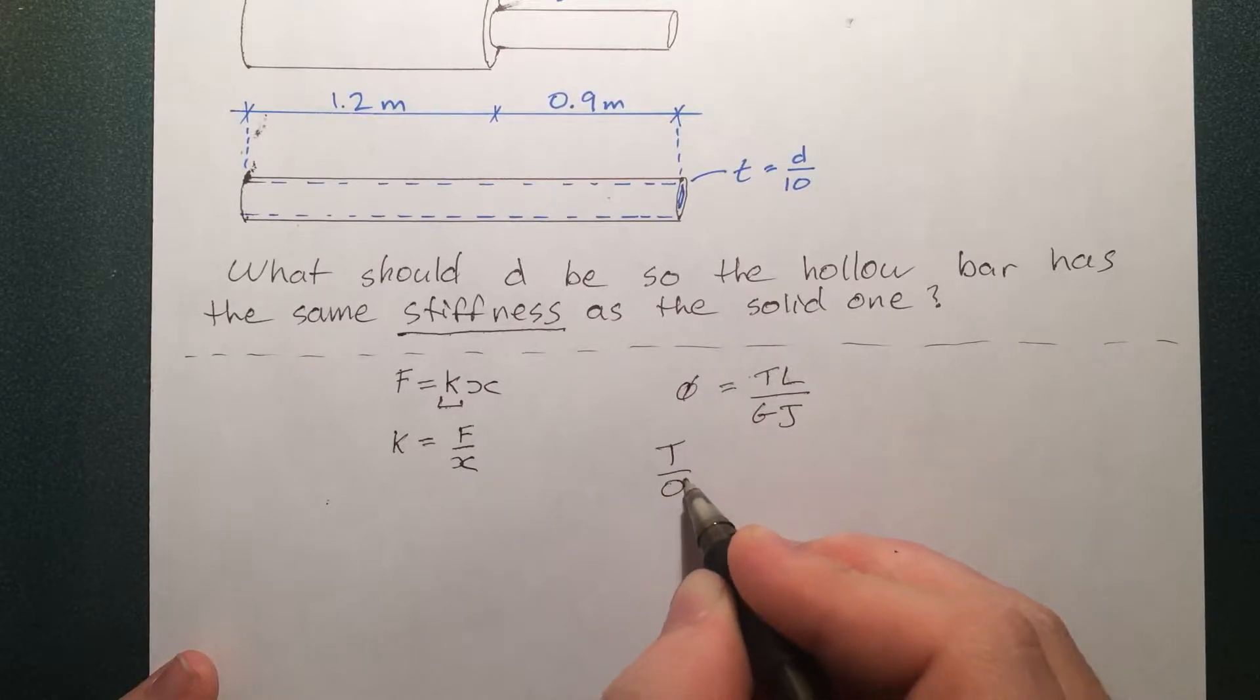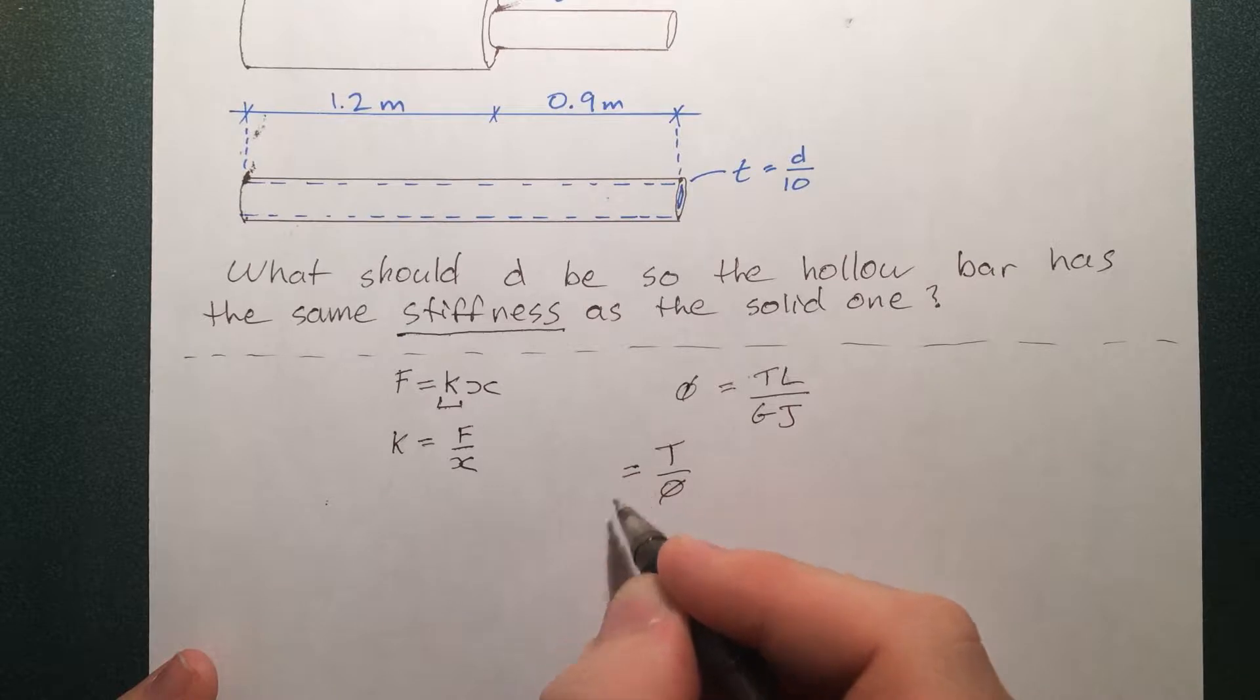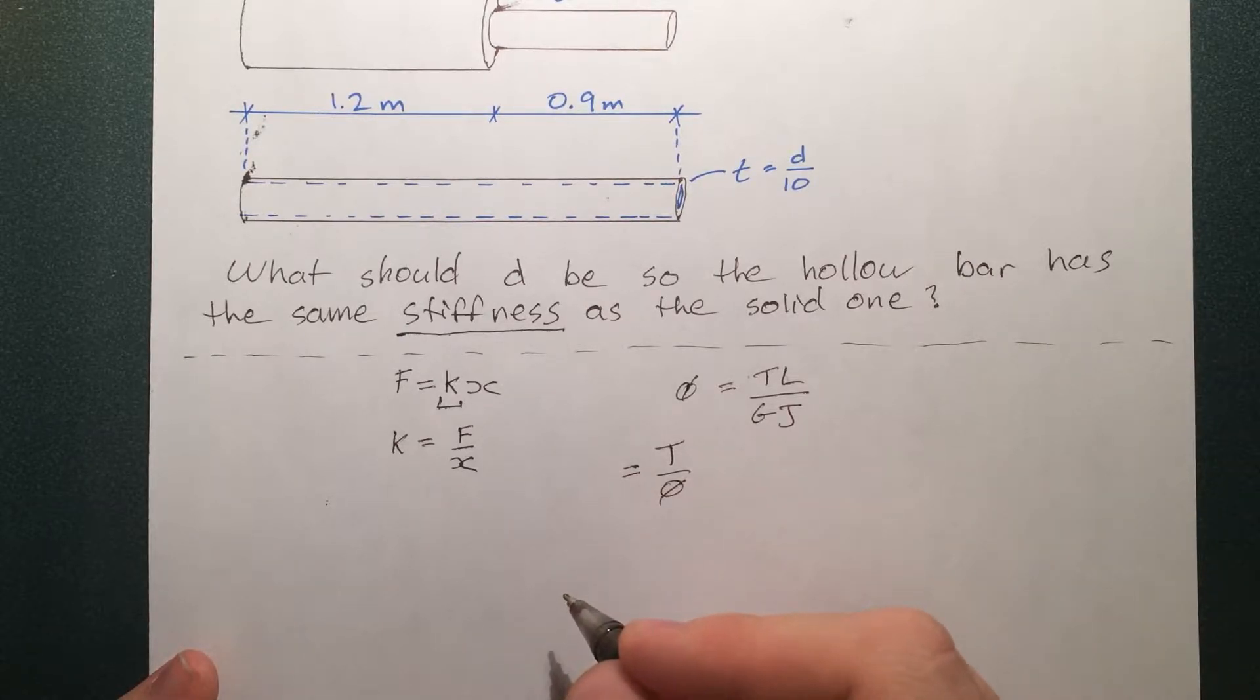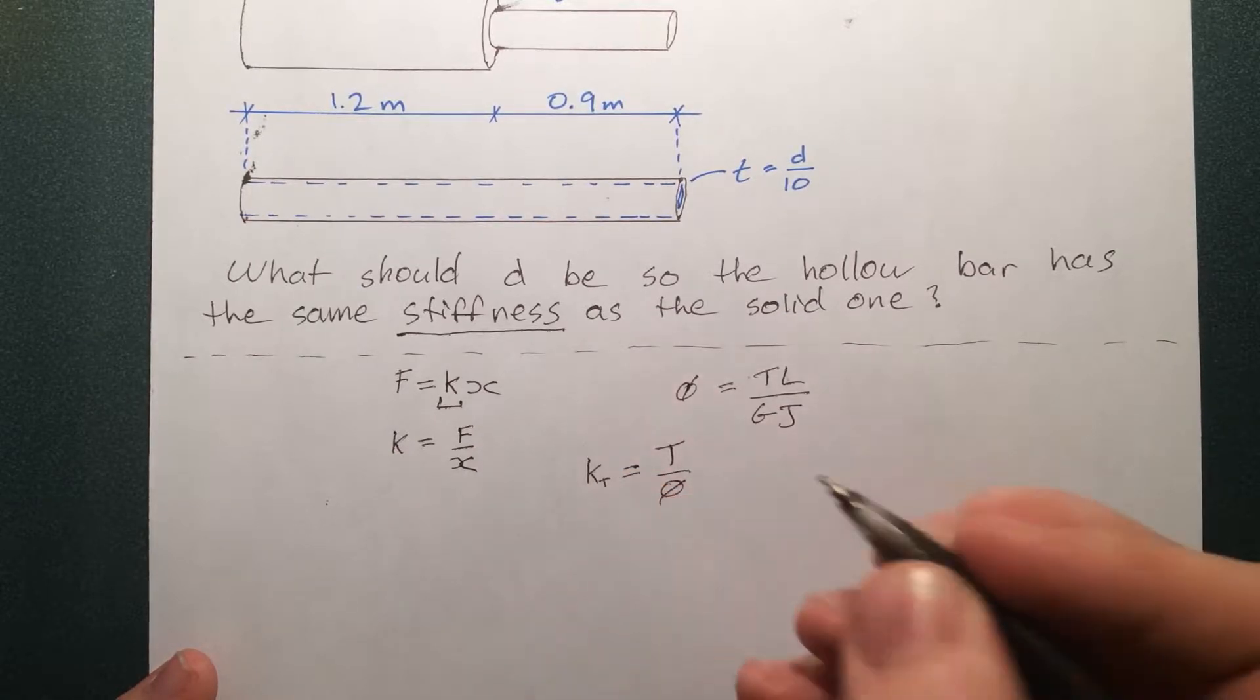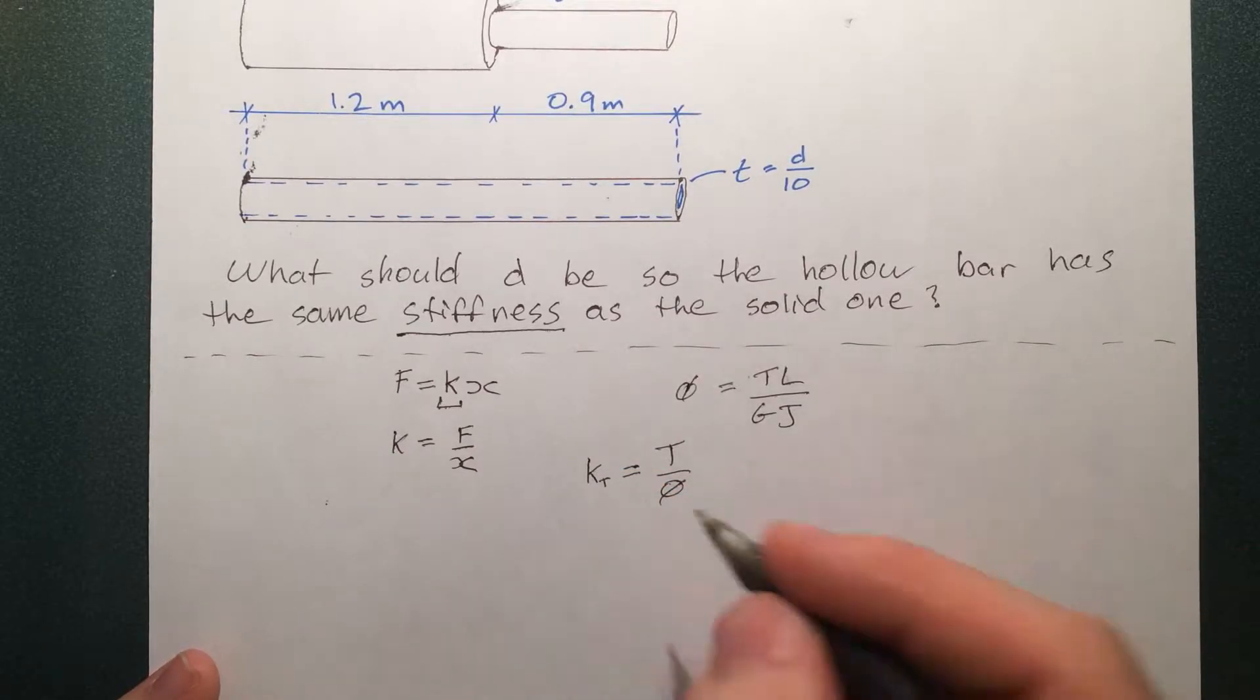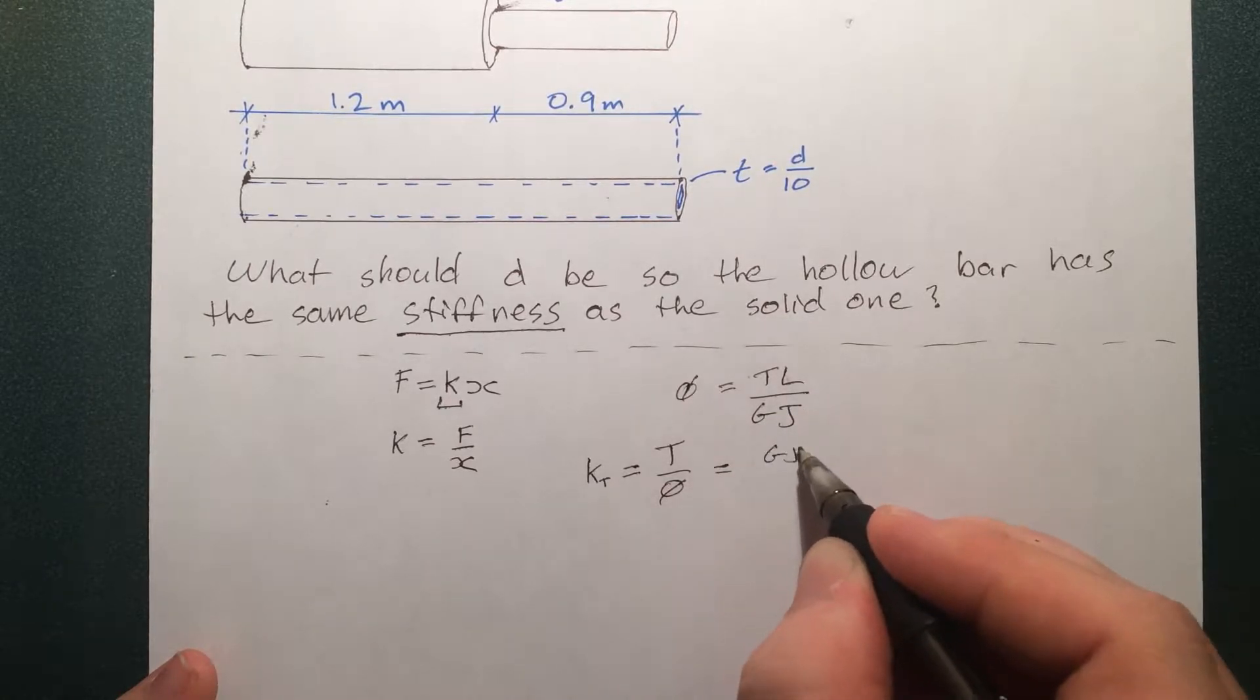So let's just write that T over phi, that's equal to the torsional stiffness. Let's just call it K torsional. Now we can also rearrange these terms around, although we're not going to use them in this question.